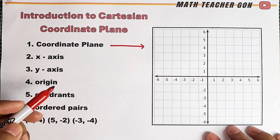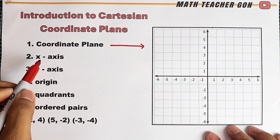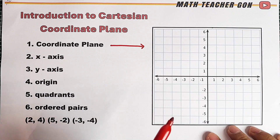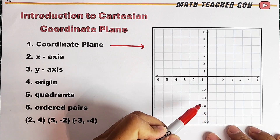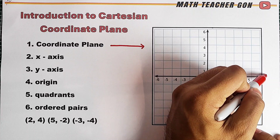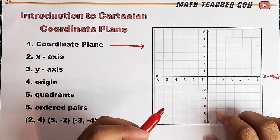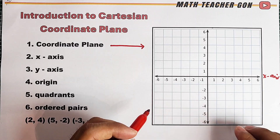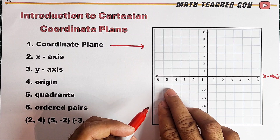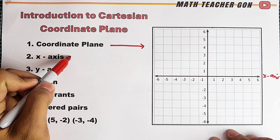Next, we have the x-axis. The x-axis is the horizontal line or horizontal number line in a Cartesian coordinate plane. As you can see, the x-axis is a number line that is composed of positive numbers and negative numbers, and here in the middle is zero. So we are done with the x-axis — this is the horizontal line.